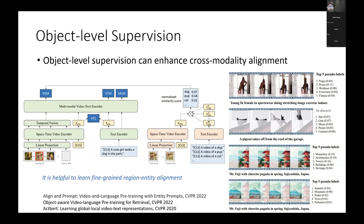A recent CVPR 2022 paper first pretrained a prompter to generate pseudo labels for video regions, then leveraged these pseudo labels to perform region-entity alignment, finding it can further improve performance. Other works such as object-aware video-language pre-training for retrieval also leverage object-level supervision.